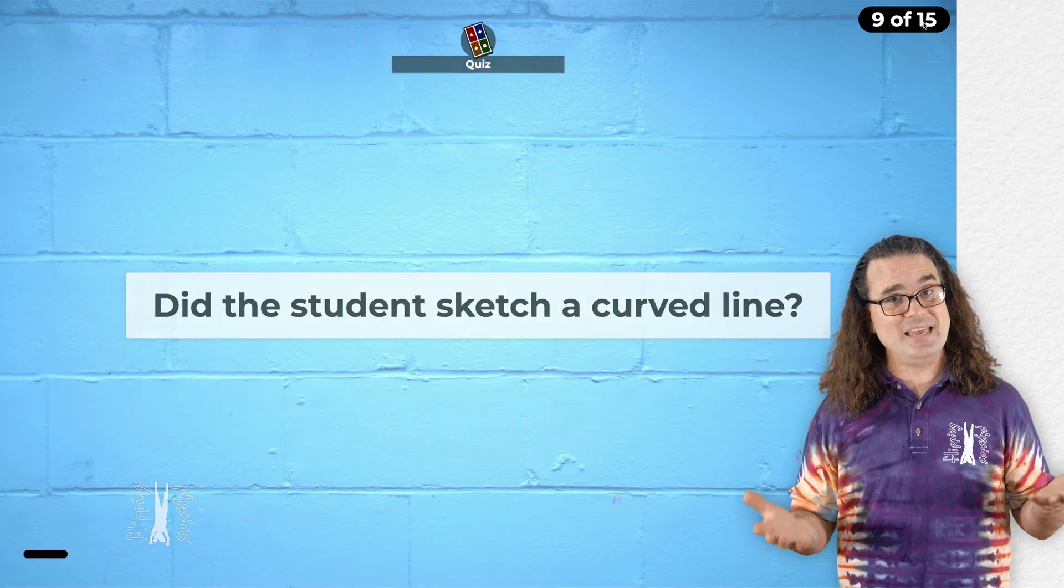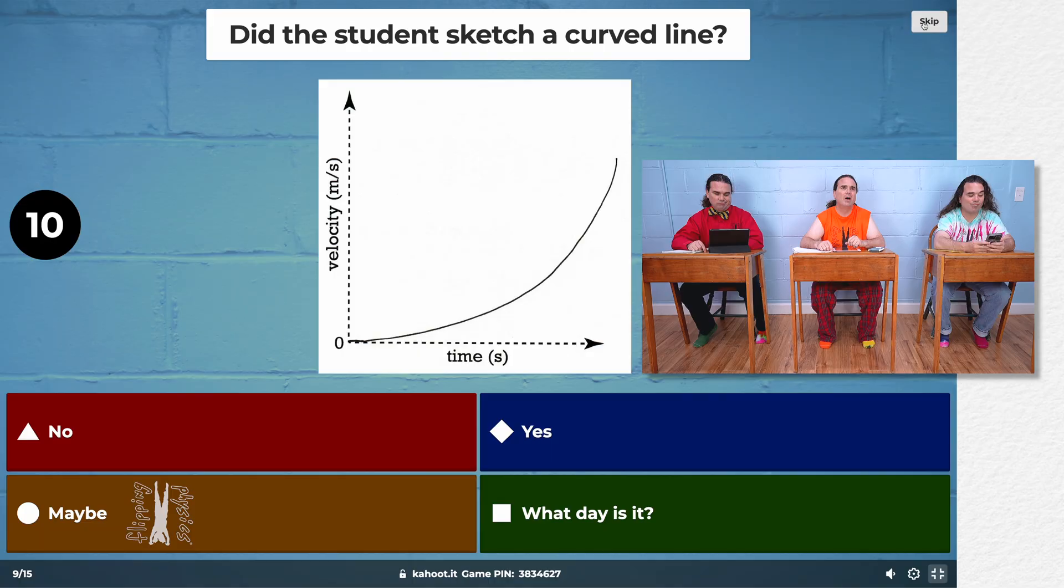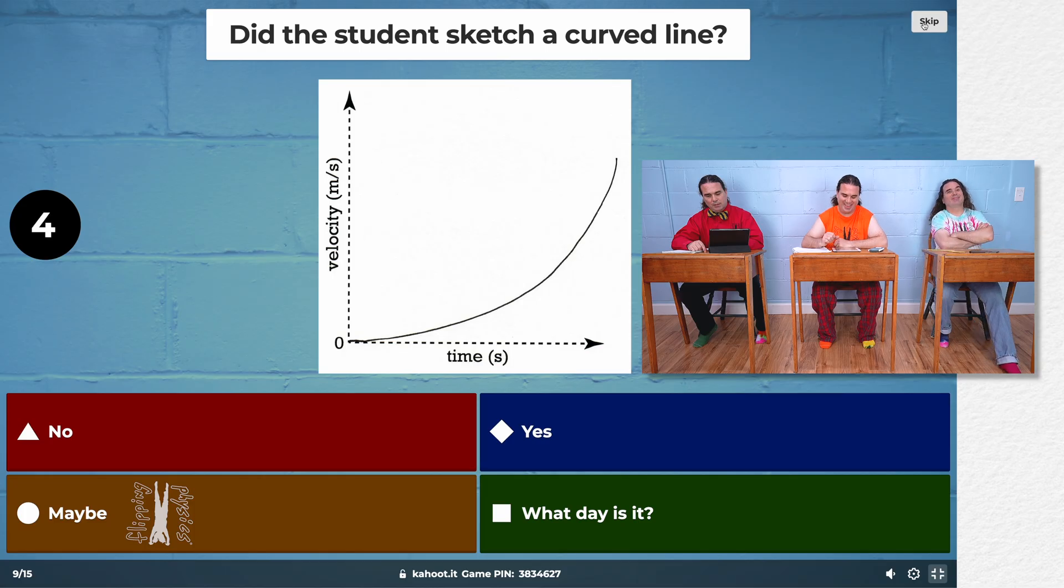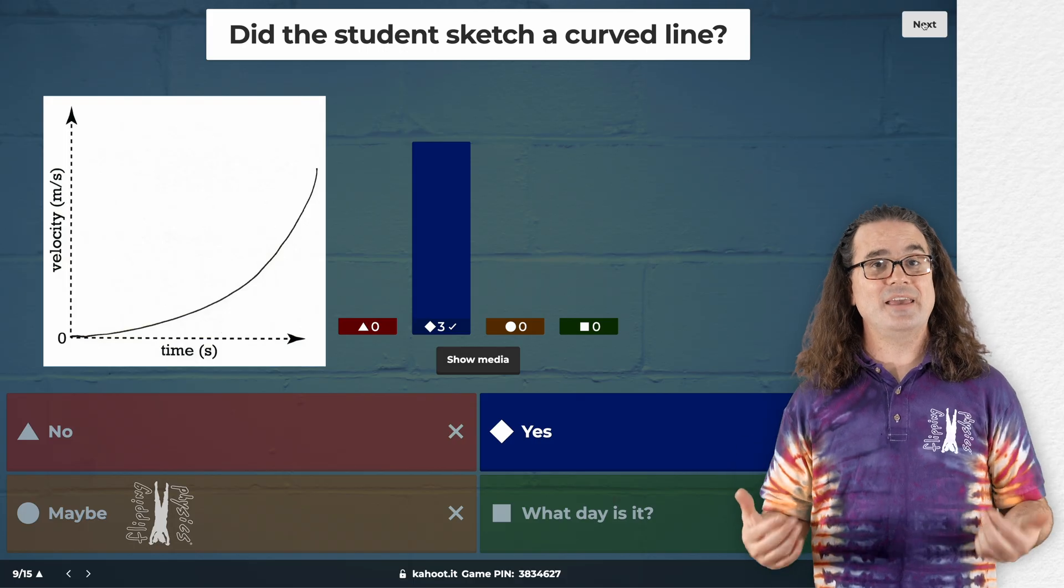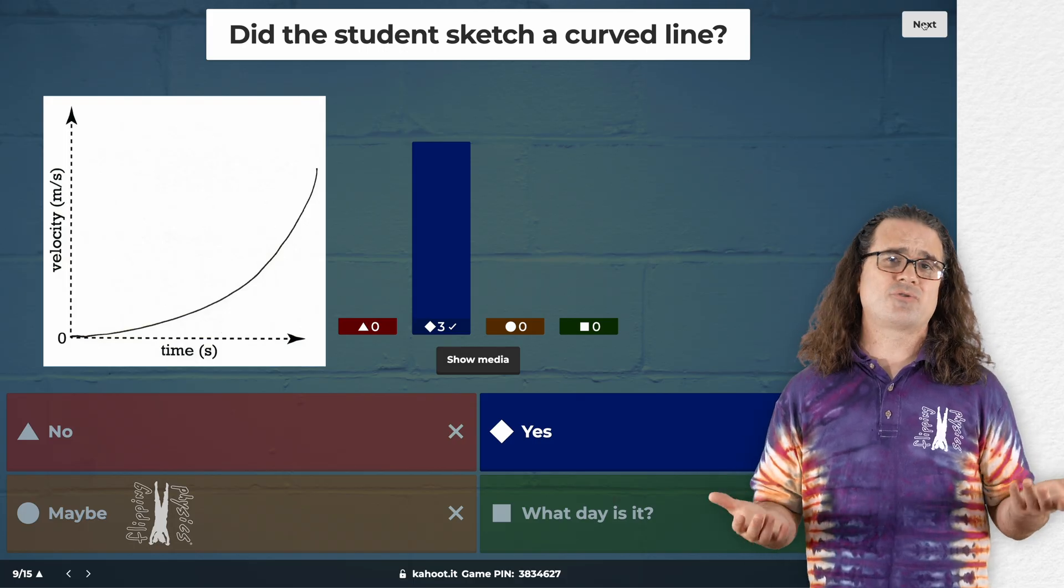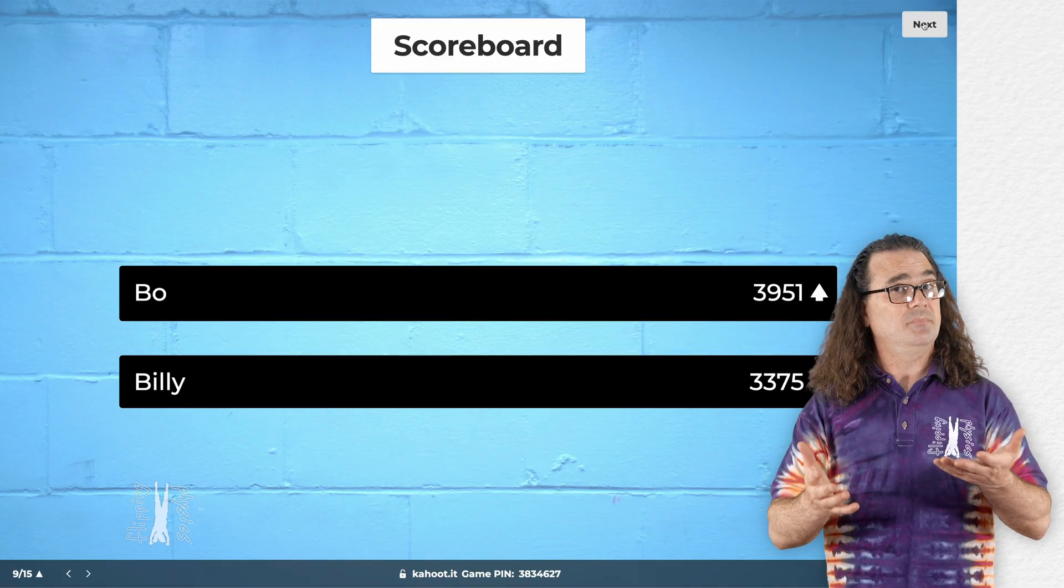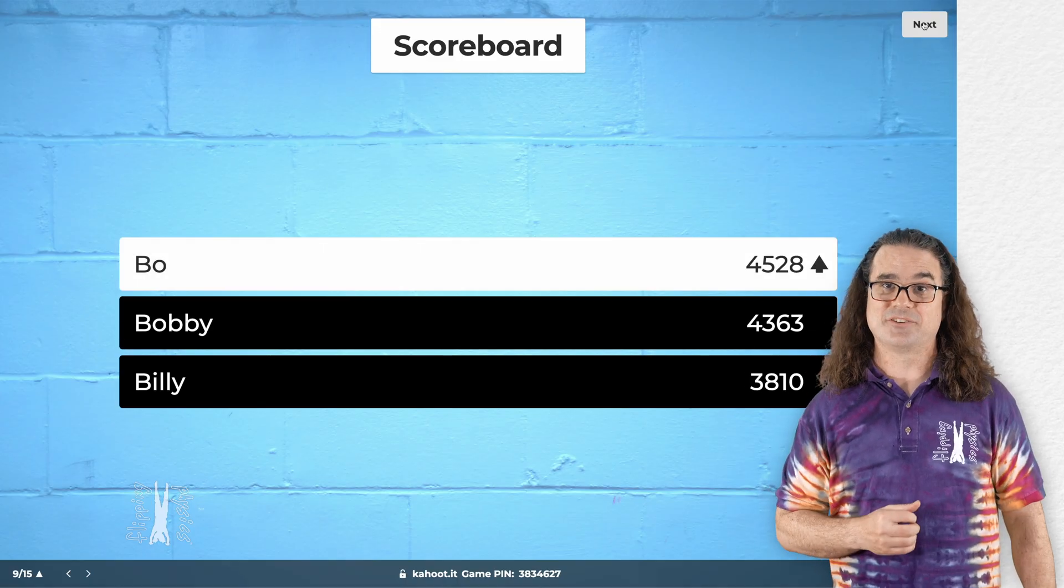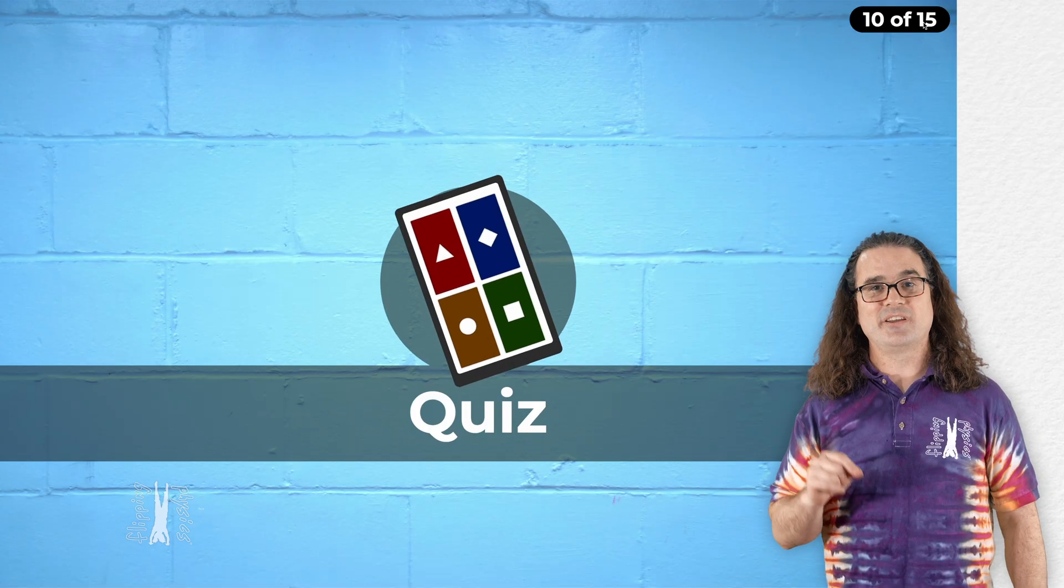If you make it ambiguous like this, you are actually more likely to not gain the point. And the ranks are still the same. And the next question again is, did the student sketch a curved line? Yeah. Yeah. Yes. Yes. Clearly a curved line. Please draw your curved lines like this. And it looks like Bo was a bit faster that time. Nice. Thanks.